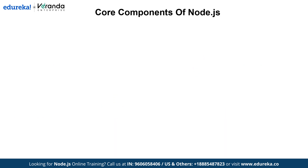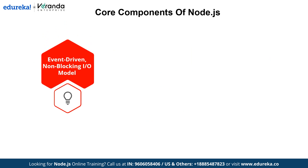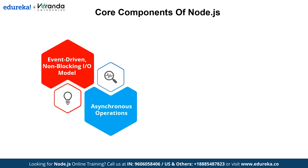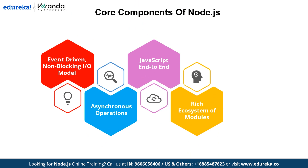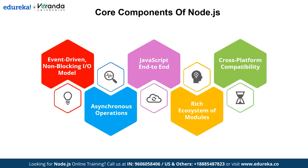Let's explore the core concepts of Node.js that make it such a powerful platform. First, Node.js uses an event-driven, non-blocking I/O model, allowing it to handle multiple tasks simultaneously without waiting for operations to complete. It also supports asynchronous operations, ensuring faster and more efficient execution of tasks running in the background. With JavaScript end-to-end, Node.js unifies front-end and back-end development. It has a rich ecosystem of modules providing countless libraries to accelerate development, and its cross-platform compatibility allows it to run effortlessly on Windows, macOS, and Linux.